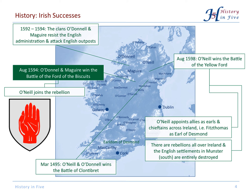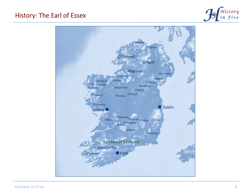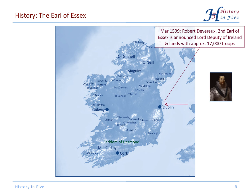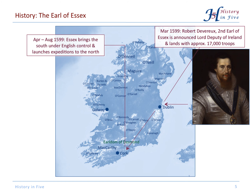However, the cities and the area around Dublin stayed loyal to the English crown. This had to be sorted out. The Earl of Essex was sent to Ireland. He landed with approximately 17,000 troops, took control over the south of Ireland, and led expeditions to the north, but that was not too successful.